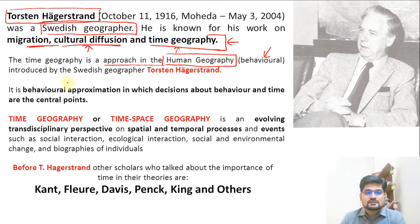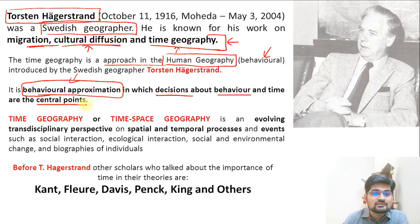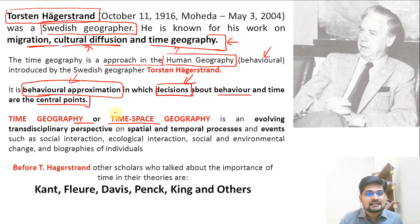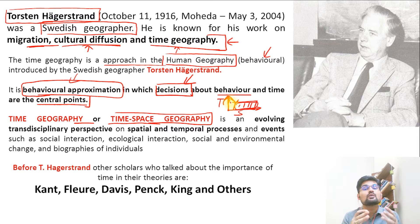Time geography holds a unique position. It is an approach in human geography that is largely part of behavioral geography — talking about how human beings behave in terms of time and space. It is a behavioral approximation, not absoluteness. Decisions about behavior and time are the central points. Time geography, or time-space geography, has one axis as time and the other as space. All events and phenomena happen in space but with a particular progression of time.